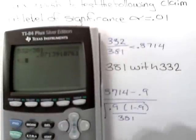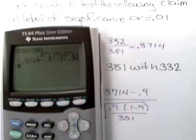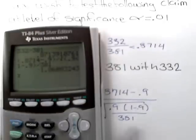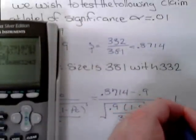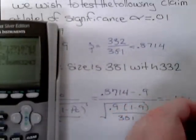Typing this in the calculator: 0.8714 minus 0.9, divided by the square root of 0.9 times 1 minus 0.9, divided by 381, gives a test statistic of negative 1.861.